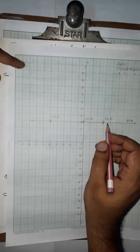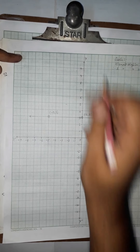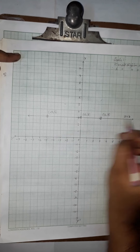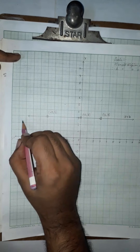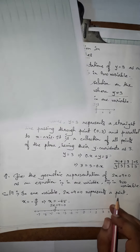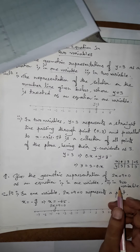So we have got y equals 3 on the graph paper in two variables, where the x-axis and y-axis are present, with arrows on both sides. Let's see the next one.